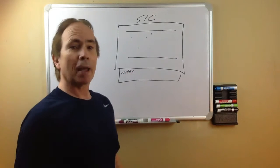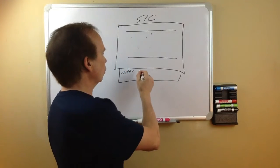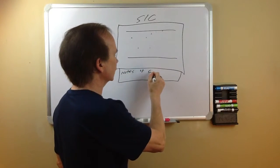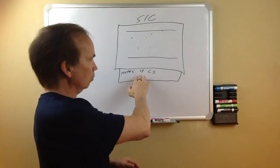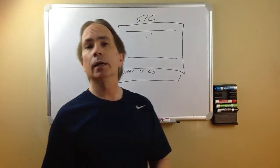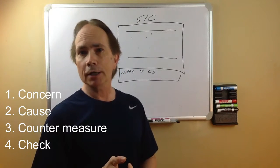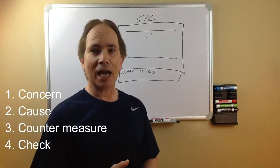And when there's abnormalities, they can capture that information. So we would want to use something called the four C's. The four C's are, and we'd create a line for each one, and they're concern, cause, countermeasure, and check.